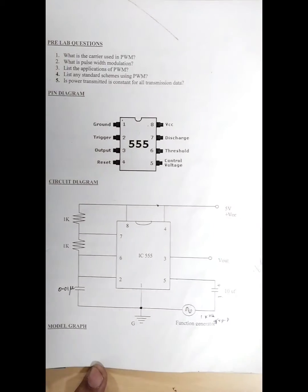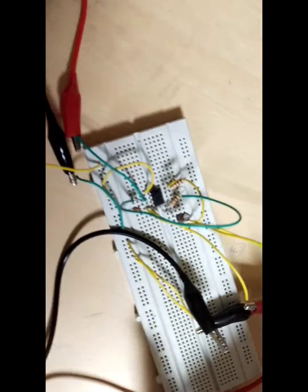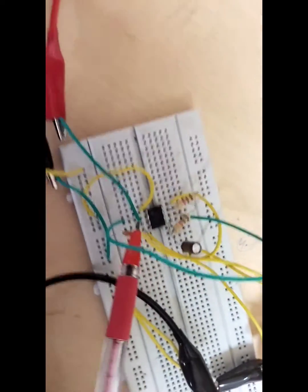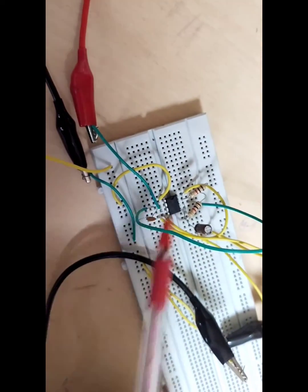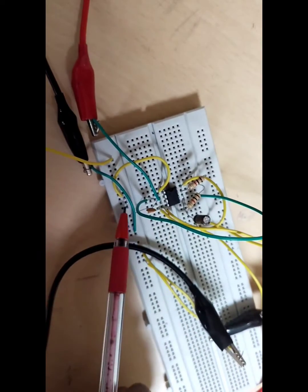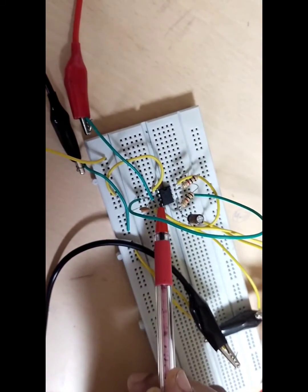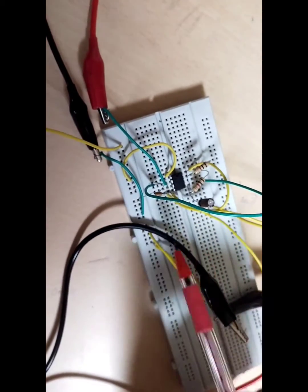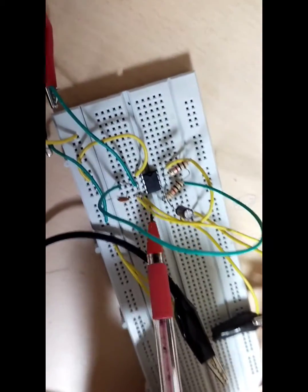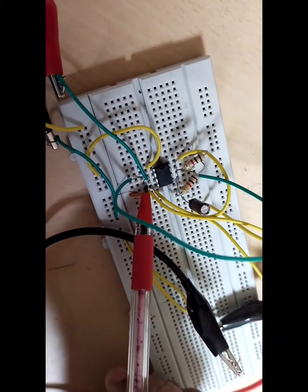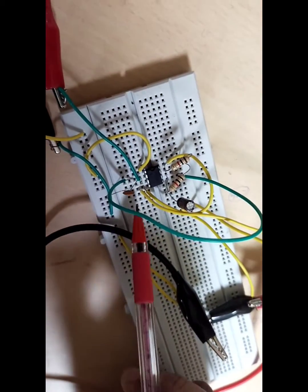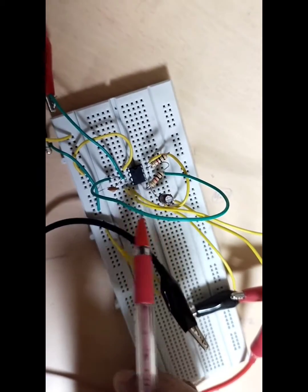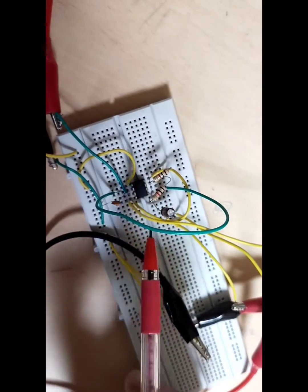Here we are using a 555 timer circuit for the breadboard connection for the pulse width modulated signal. The first pin of the timer circuit is grounded, directly connected to ground. From the second pin, we are connecting a 0.01 microfarad capacitor to ground. From the third pin, the output is taken. The fourth pin is connected to the eighth pin through a jumper wire, so fourth and eighth pins are shorted.